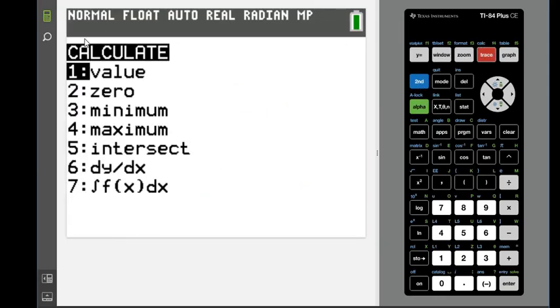So what I'm going to do is I'm going to hit second and trace. Above it, it says calculate. You can see here, these are all the things that you can calculate. Because we are looking for the maximum point, we are going to choose option four.